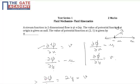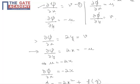Now, del psi upon del x — that is differentiation of psi with respect to x — gives 2y, and from relation 1, 2y should equal v. Similarly, del psi upon del y comes out as 2x, and from relation 2 it equals minus u. So u comes out as minus 2x and v comes out as 2y.